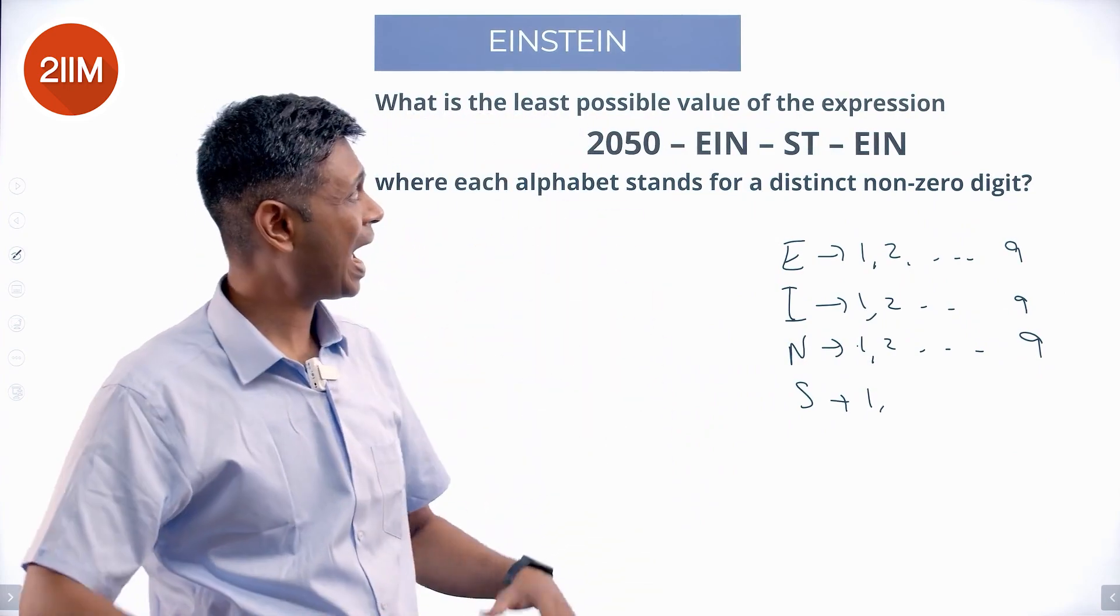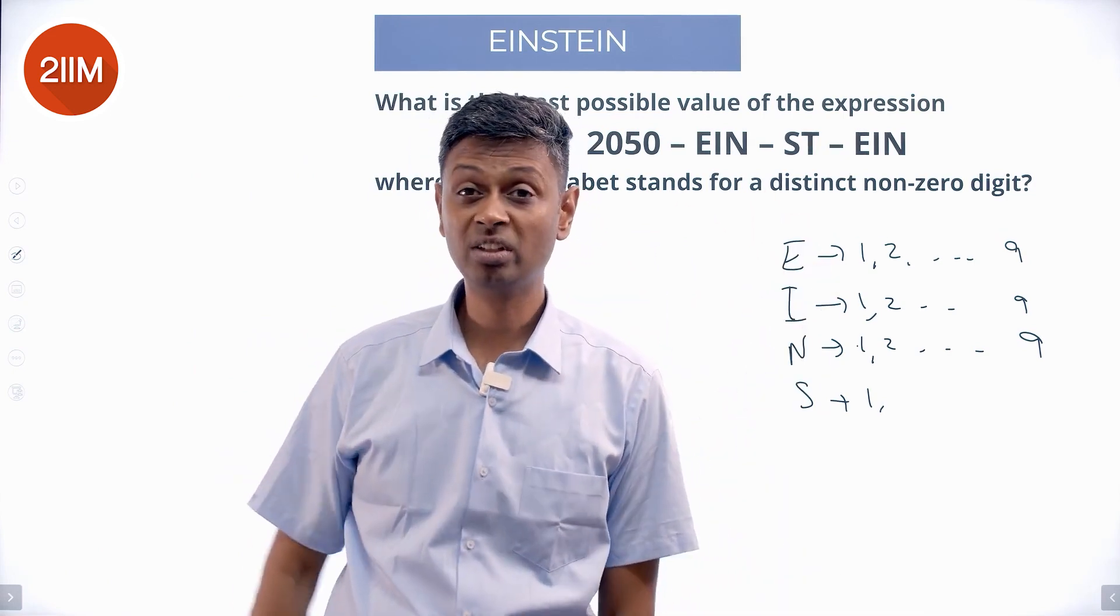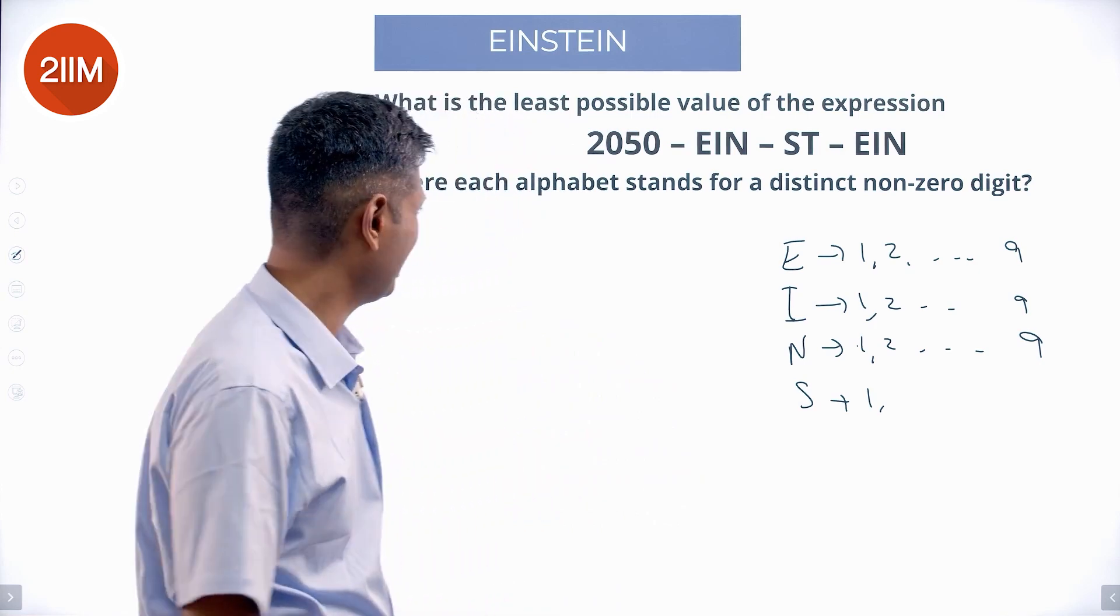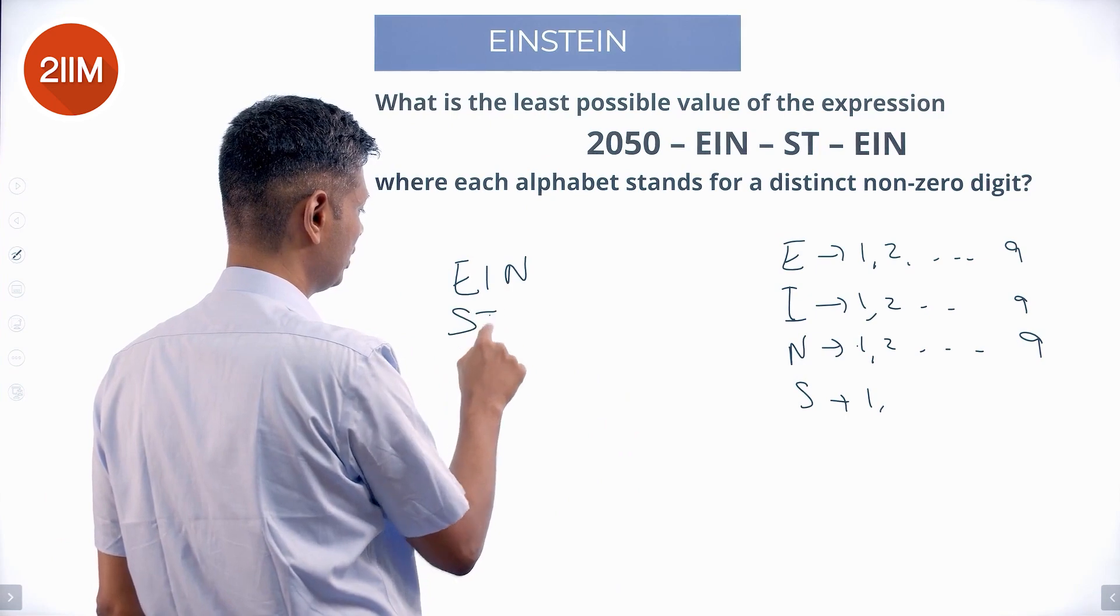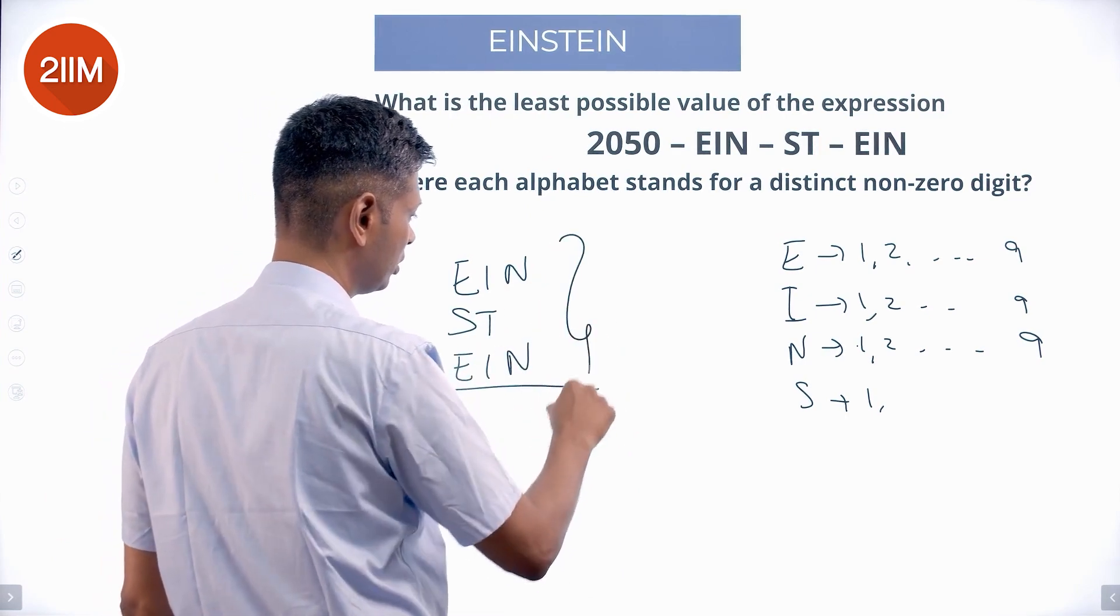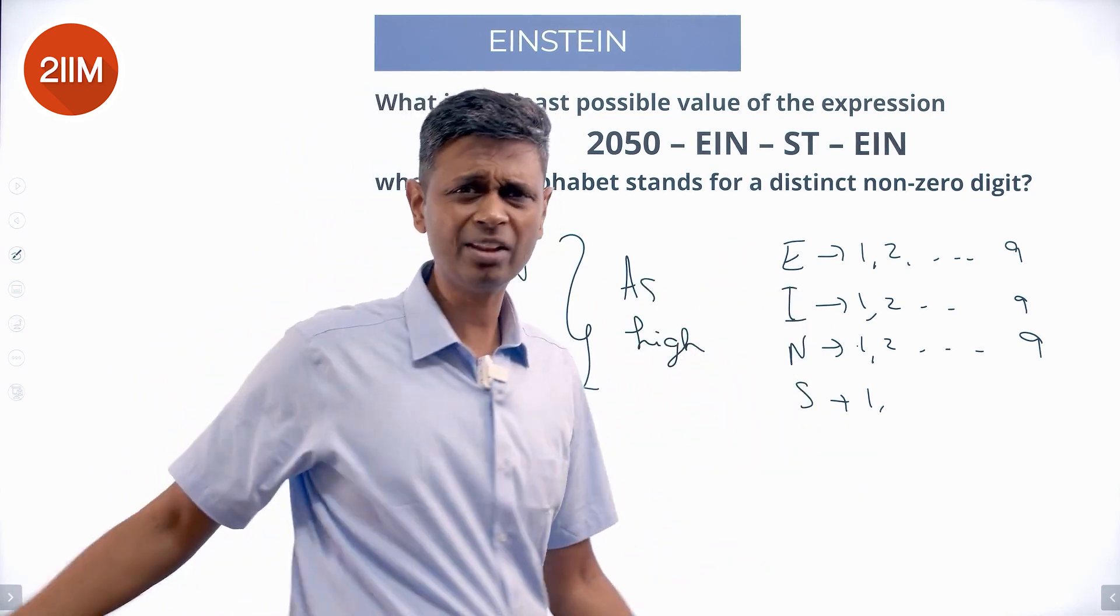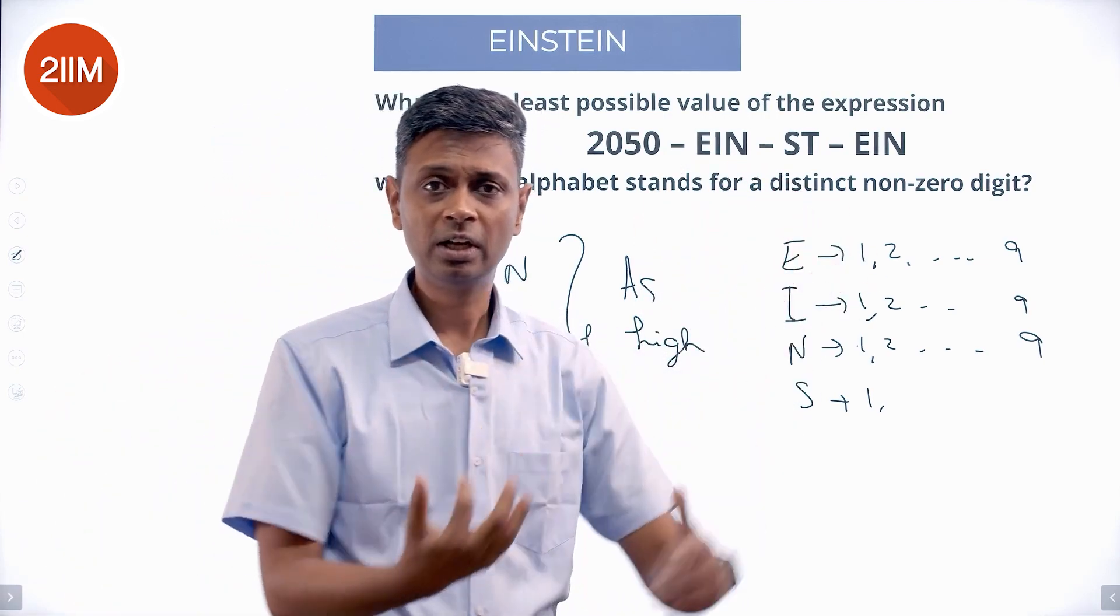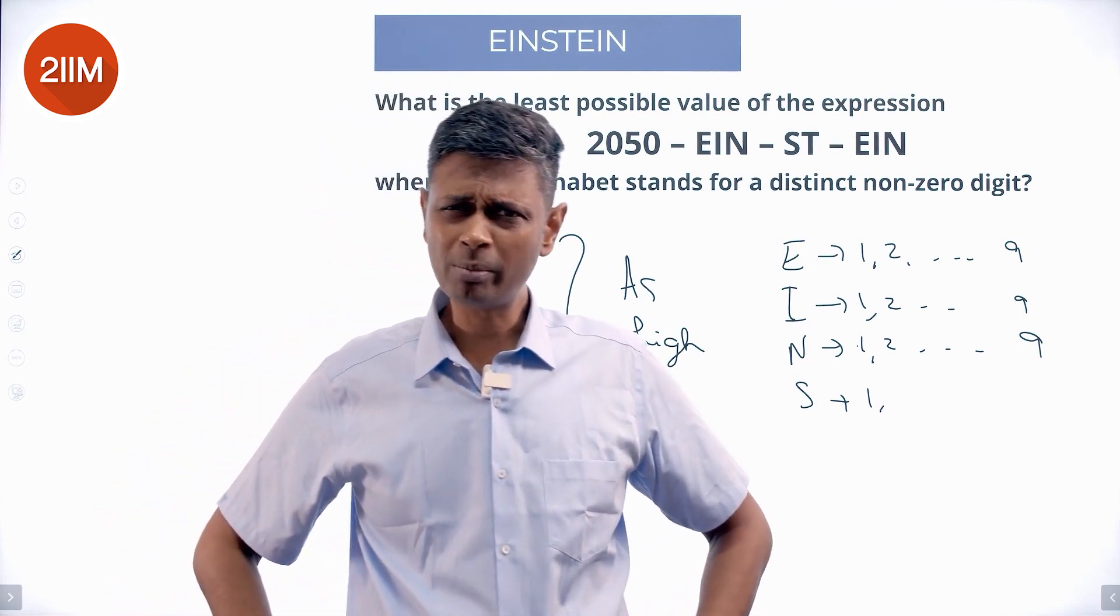I want this to be as small as possible. I'm subtracting from 2050, and I want that subtracted thing to be as small as possible, or I want EIN + ST + EIN to be as high as possible. I'm subtracting this from 2050, so I want the remaining to be as small as possible, which means what I'm subtracting should be as high as possible.